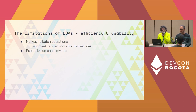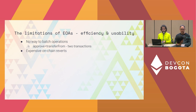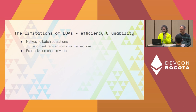The other big limitation of EOAs is efficiency. Many times what you actually want to do spans more than one transaction — for example, you want to approve and then transfer. Those are two transactions, but you think of them as one operation. With EOAs you'd have to send two separate transactions, which might not work out, may be more expensive, and there's no atomicity built in. If there's a revert on-chain, that's expensive — especially with time-sensitive things.